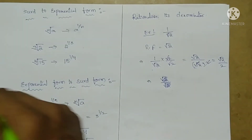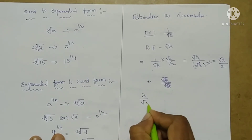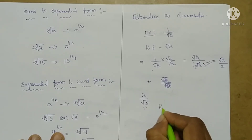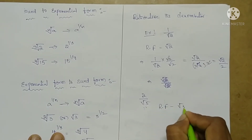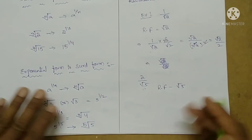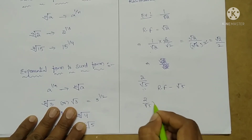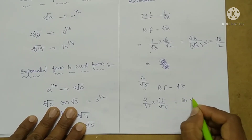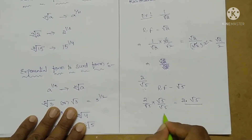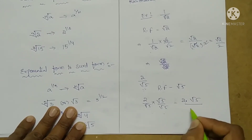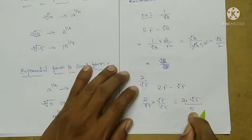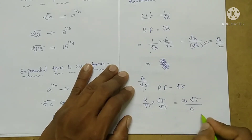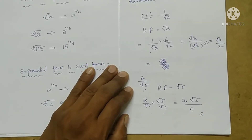Take another example: 2 by root 5. Here the denominator is root 5, so the rationalizing factor is root 5. Multiply numerator and denominator by root 5 — that gives 2 into root 5 divided by root 5 whole square. The square and square root cancel, so the denominator becomes 5. The final result is 2 root 5 by 5, where the denominator is rationalized.